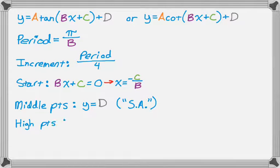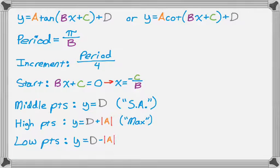There are high points, and that's going to be at y equals D plus the absolute value of A, so that's the same as how you found the maximum for sine or cosine. And then there are low points, and this is really similar to finding the minimum, so it's going to be D minus the absolute value of A. That'll take you to a minimum, or that's your low point, but it's like the minimum.